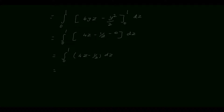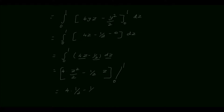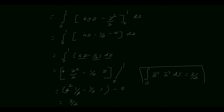Integrating 4z minus 1/2 with respect to z: integration of 4z dz is 4 times z squared by 2, minus integration of 1/2 dz is 1/2 times z. Applying the limits from 0 to 1: upper limit gives 4 times (1/2) minus 1/2 times 1, minus lower limit which is 0. This gives 2 minus 1/2, which equals 3/2. So the surface integral of A vector dot N vector into dS is equal to 3/2.